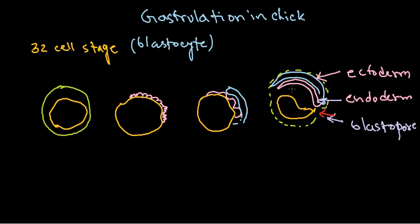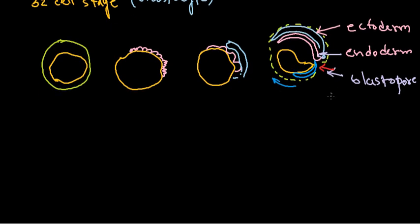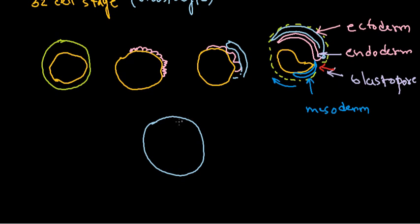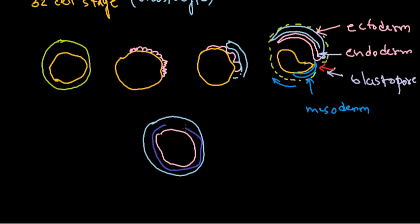After the invagination is going on by the ectoderm and endoderm, another new layer of cells starts to form and takes an opposite direction through this layer. This new layer of cells from the blastocyte moves in an anti-clockwise orientation, and sooner it will reach in between the first two layers. This is termed as the mesoderm. Ultimately, after completion of all these stages, we have ectoderm completely outside, endoderm inside, and mesoderm in between.